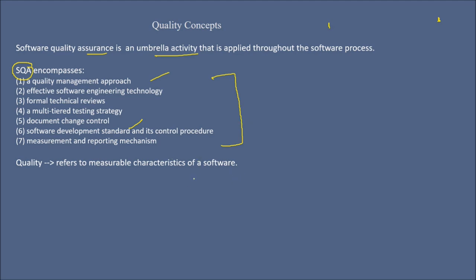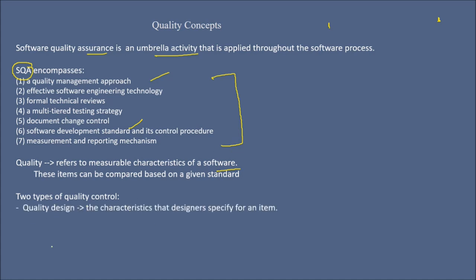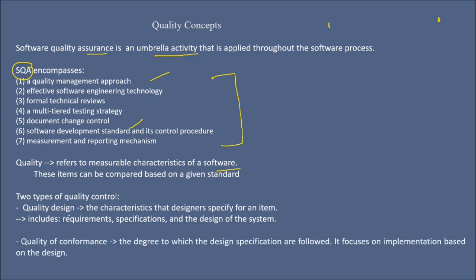Quality refers to the measurable characteristics of a software, or conformance to the user requirement or the specifications. These items can be compared based on certain standards. There are two types of quality control. First is quality design, which means the characteristics that designers specify for an item — including the requirement, the specification, and the design of the system. And then quality of conformance, which is the degree to which the design specifications are followed. The user requirements are converted to design specifications, and how much or to what extent those specifications are followed is the quality of conformance. It focuses on implementation based on the design.